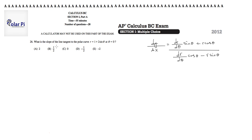Problem 26 says, what is the slope of the line tangent to the polar curve, this, given at theta equals 0 radians?